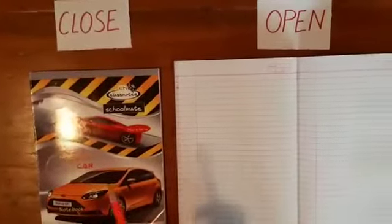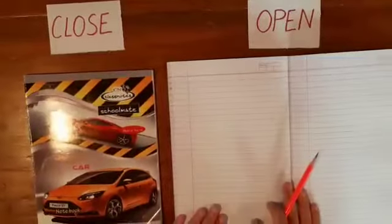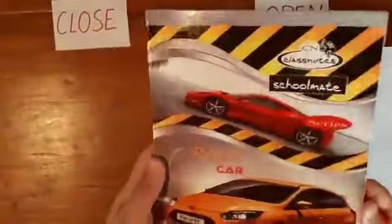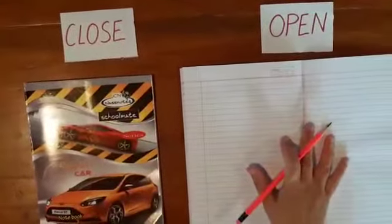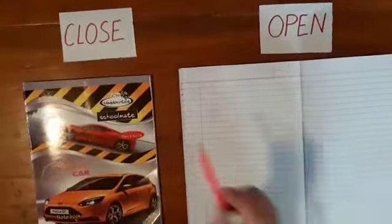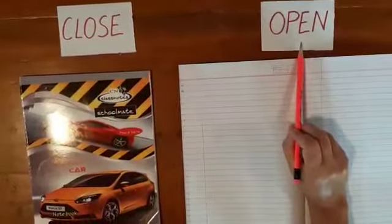So children, the opposite of close is open. This notebook is closed and this is open. See, I'll do it — this is closed and open. Close. Open. So this is closed and this is open. What is the opposite of close? It's open.